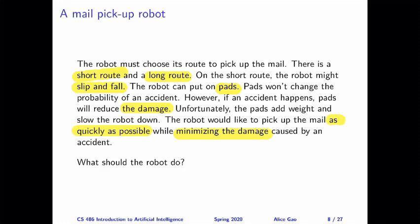So we came up with four different nodes, one for accident, which is a random variable, two decision nodes, one for whether to choose a short route or the long route, and the other one for wearing pads or not.